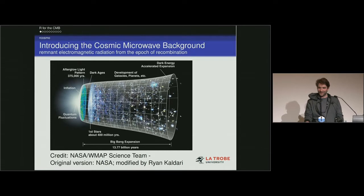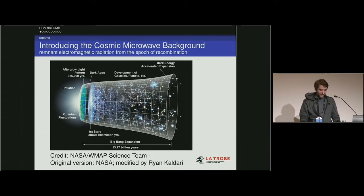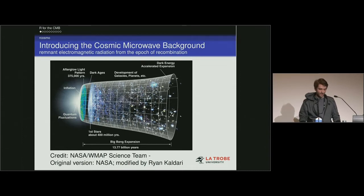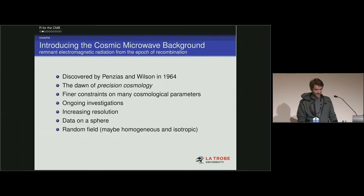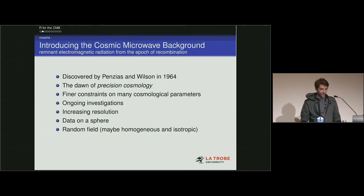Well, it's remnant electromagnetic radiation from about 14 billion years ago. It's sort of like a baby photo of the early universe, and it tells us a lot about the structure of the universe and its evolution over time. It was discovered in 1964 by a couple of Bell Labs physicists, and considered to be the dawn of precision cosmology when they produced the first full-sky map.